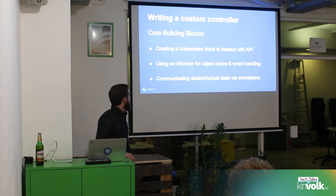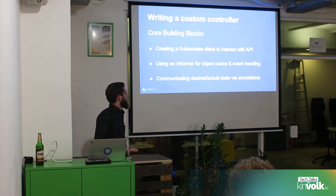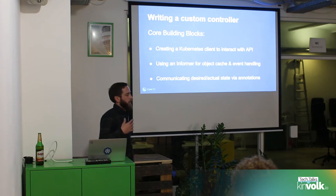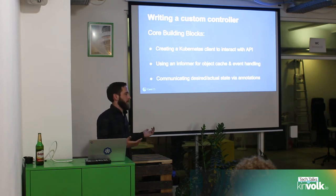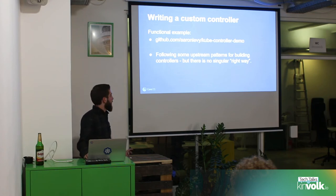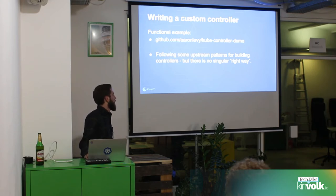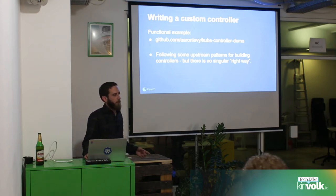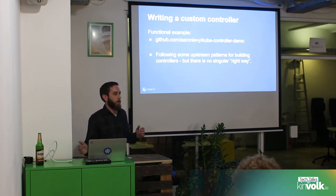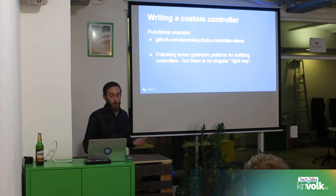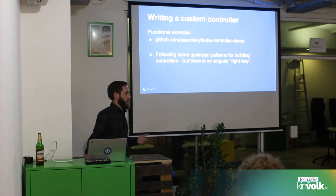The core building blocks are three main things: creating a client to interact with the API, using an informer that manages our object cache and event handling, and being able to communicate our desired state. In this case, we're doing that with annotations on an existing Kubernetes object — nodes. There's a full example at kube-controller-demo under my GitHub account, Aaron Levy. This follows upstream patterns established for building controllers, but there's no singular right way — you can do this in many languages. I'll go over it using the Go client, but the same ideas are universal.